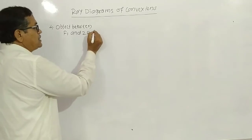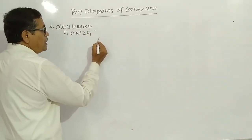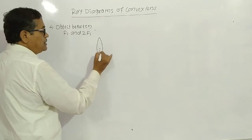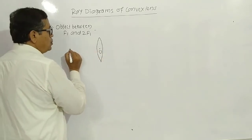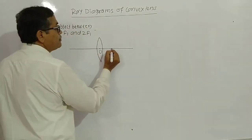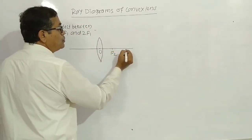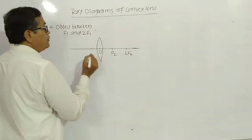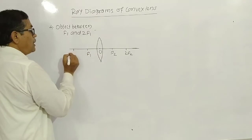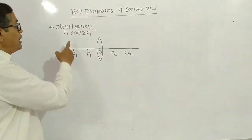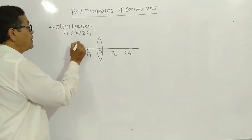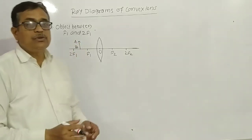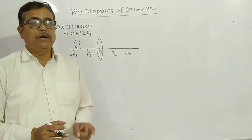Look here — where is the image? We can draw the diagram. Here you have a Convex Lens, with Optical Center O, then the principal axis, here F2, then 2F2, here F1 and 2F1. The object AB is placed between F1 and 2F1. We will use two rules: rule number one and rule number three.